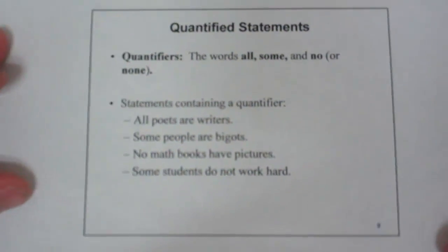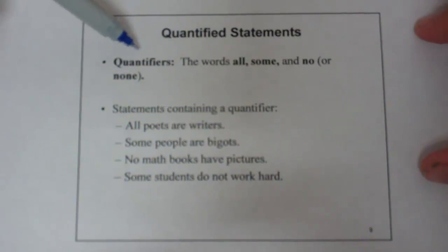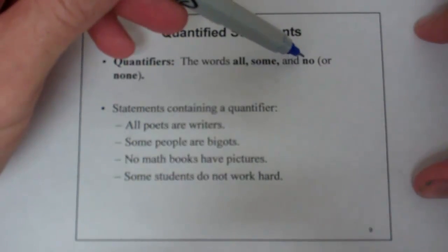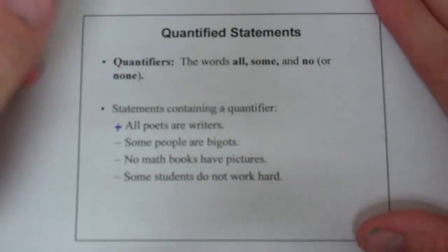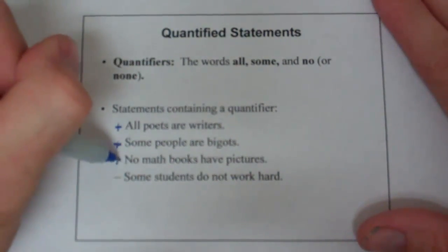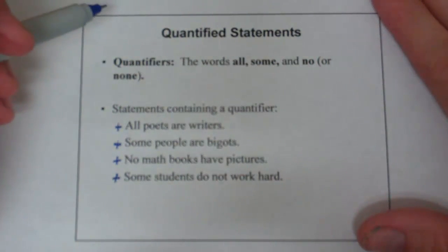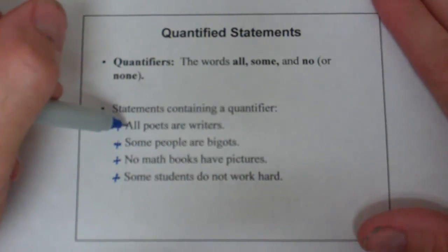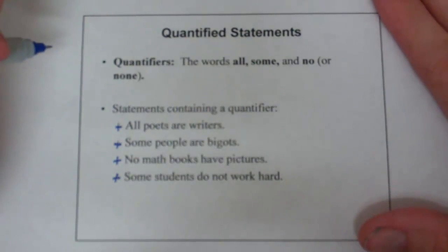Now we deal with quantified statements, which are probably the hardest. The quantifiers are the words 'all,' 'some,' and 'no.' Examples: 'All poets are writers,' 'Some people are bigots,' 'No math books have pictures,' 'Some students do not work hard.' So it's a quantifying statement — always true, sometimes true, never true — and we have specific ways to negate these because of the quantifiers.